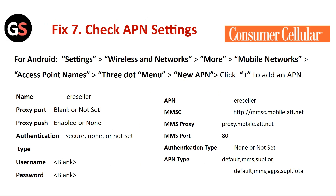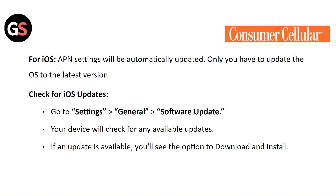Fix 7: Check APN settings. For Android, go to Settings, Wireless and Networks, click on More and Network Settings, click on Access Point Names and tap on the three-dot menu. Click the add icon to add a new APN. For iOS, APN settings will be automatically updated — you only need to update the OS to the latest version. Go to Settings, then General, then Software Update. Your device will check for any available update, and if one is available, you will see the option to download and install.